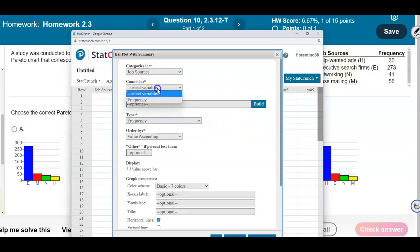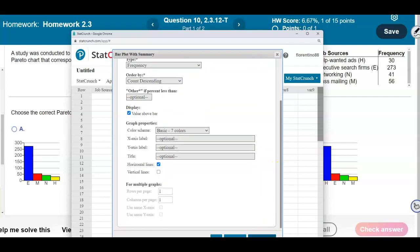Now what we want to do is select the categories which is job sources, which is what we created, and then the counts are going to be in the frequency. And now with the Pareto chart, we want the values to be descending. So we want the count to be descending. We're going to select values above the bar, and then we're going to go ahead and select compute.